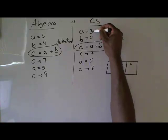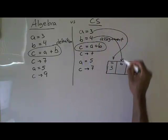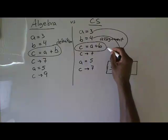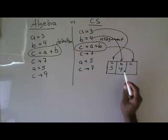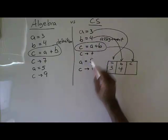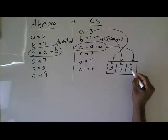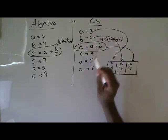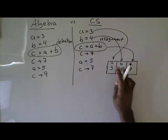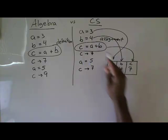The statement A equals 3 assigns the value 3 to memory location A. The statement B equals 4 assigns the value 4 to memory location B. The statement C equals A plus B takes what's in memory location A (which is 3) and what's in memory location B (which is 4), adds them together, and puts the result into memory location C. So the value 7 goes into memory location C. If I change memory location A from 3 to 5, that has no effect on memory location C because nothing more has been assigned to it. This is assignment.